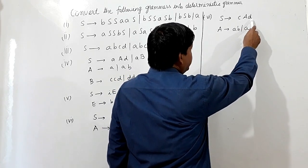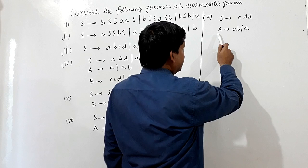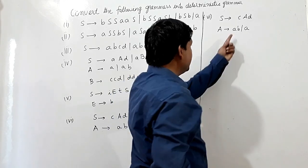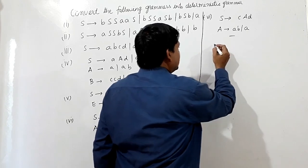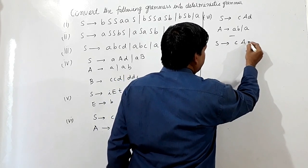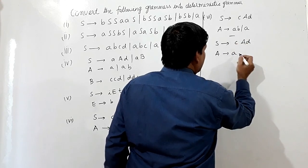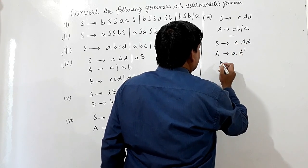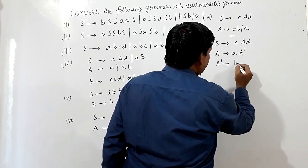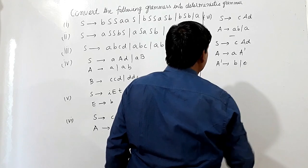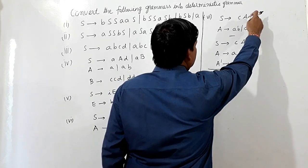S is producing CAD — there is a single production here. A is producing AB or A, and A is common here. So we have to write S produces CAB, and A is producing A-dash. A-dash is producing B for one production and X for the other. This is the deterministic grammar corresponding to this grammar.